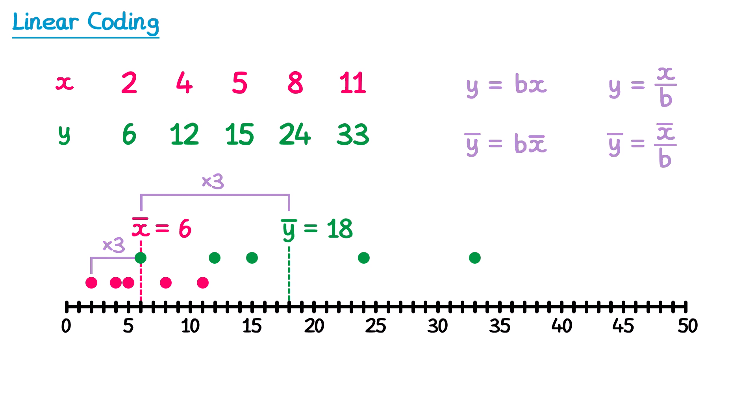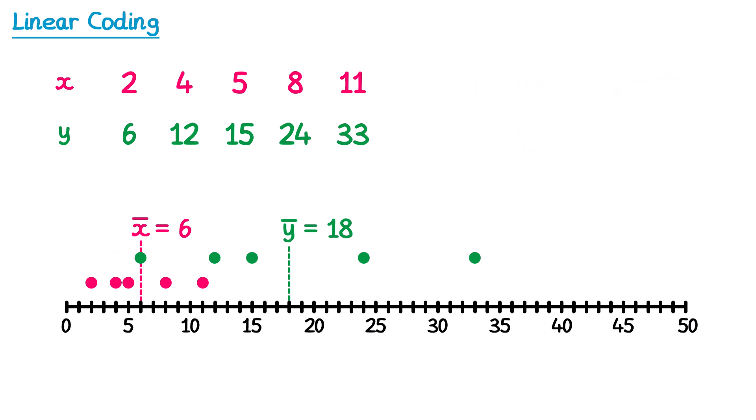But what happens to the standard deviation? Well if you look at the data this time, you can see the green data is clearly more spread out. Let's take a look at what happened to the greatest value in the original set x — the value 11. The difference between this value and the mean is 5. When we coded this value we got 33, but the difference between this value and the mean is now 15. Since 15 is 3 times greater than 5, this data point is now 3 times as far away from the mean. And this will apply to all of the data points, meaning the coded data is 3 times more spread out than the original data.